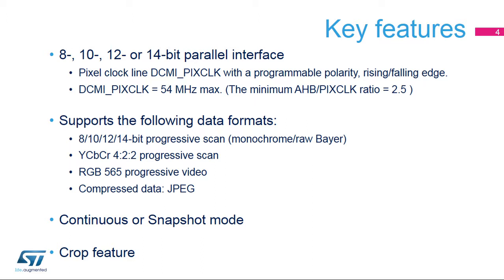It supports color or monochrome cameras using different data formats: uncoded parallel data, also known as progressive scan, which can be either monochrome or color, raw Bayer; luminance color-coded on 8-bit, 4:2:2 progressive scan; and RGB 565, red-green-blue information coded on 16-bit. Some cameras also use this parallel interface to transmit compressed images in JPEG format.